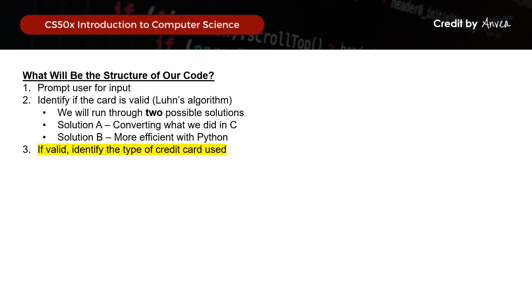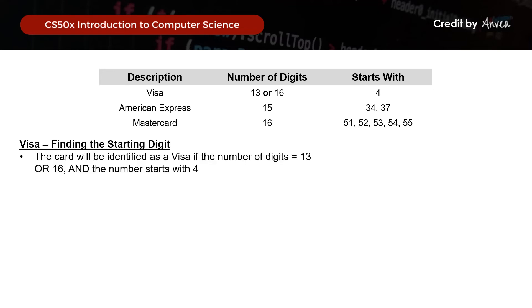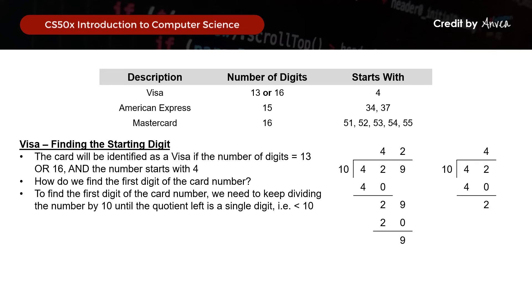So moving on, what we want to do now is identify the type of credit card used. We are told: Visa contains 13 or 16 digits starting with 4; Amex contains 15 digits starting with 34 or 37; MasterCard contains 16 digits starting with 51, 52, 53, 54, or 55. Starting with Visa — how do we find the first digit of the card number? We keep dividing the number by 10 until the quotient is a single digit less than 10. For example, 429 divided by 10 gives 42, then 42 divided by 10 gives 4 — and that is how you find the first digit.